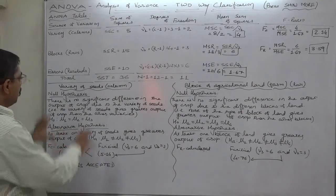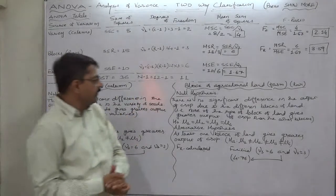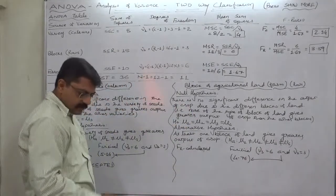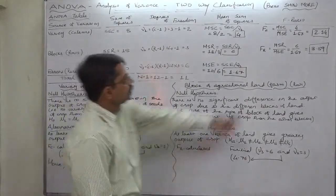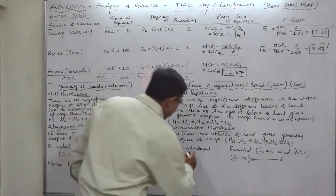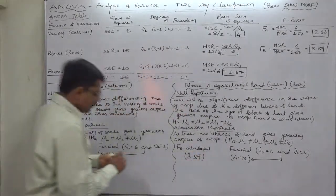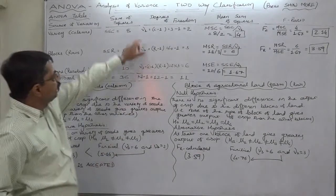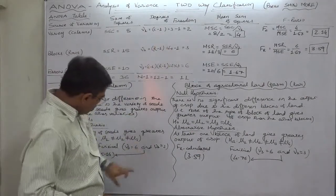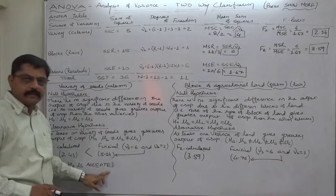Acceptance of the null hypothesis means the null hypothesis itself remains our final conclusion: no variety of seeds gives greater output of crop than the other varieties. So far as the output of the crop is concerned, all varieties are equal in performance — using any variety will not make a greater difference in output. This is our conclusion about the variety of seeds.